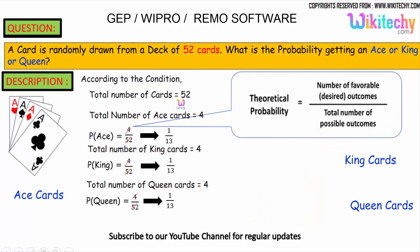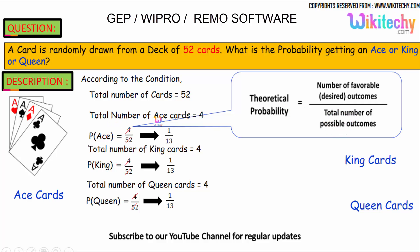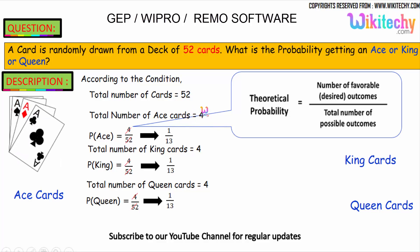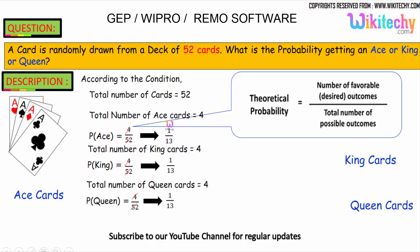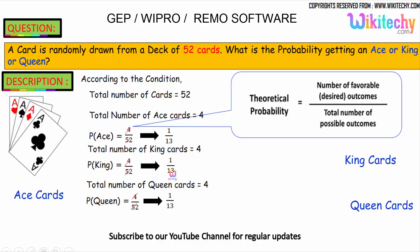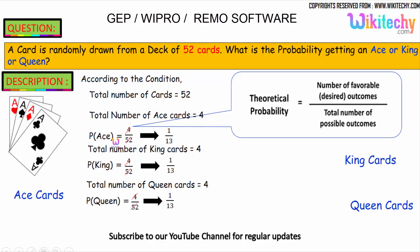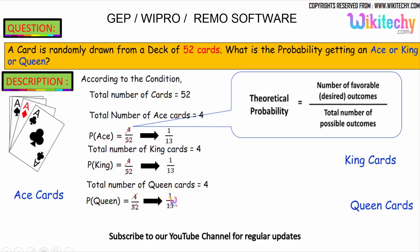The total number of cards is 52. Probability is the number of favorable outcomes divided by the total number of possible outcomes. The total number of ace cards is 4, so 4 divided by 52 gives a probability of ace = 1/13. The total number of king cards is 4, so probability of king = 1/13. The queen cards are also 4, so probability of queen = 4/52 = 1/13.